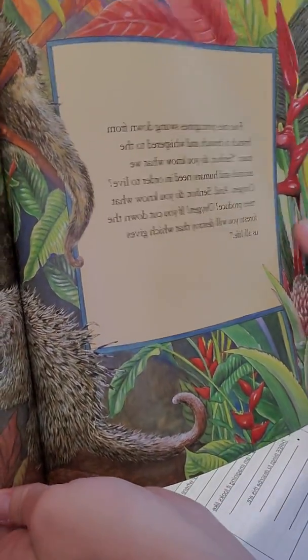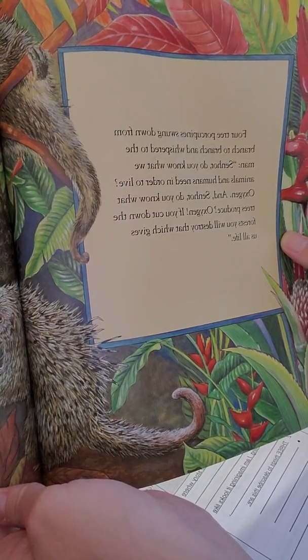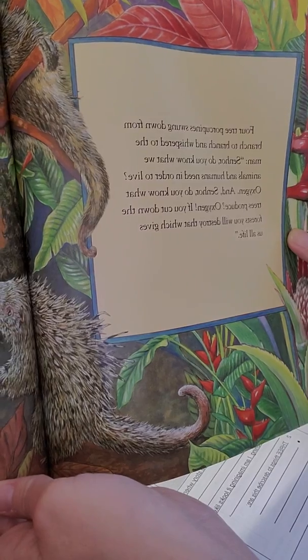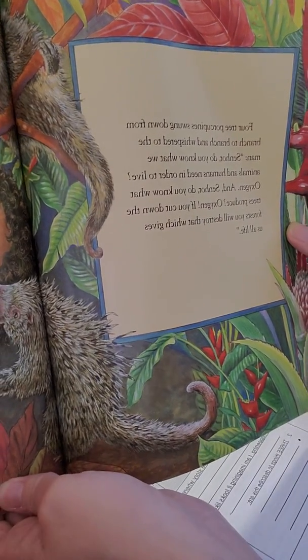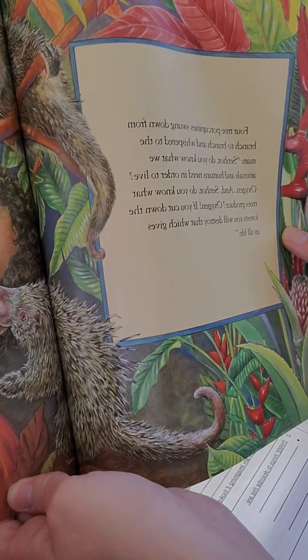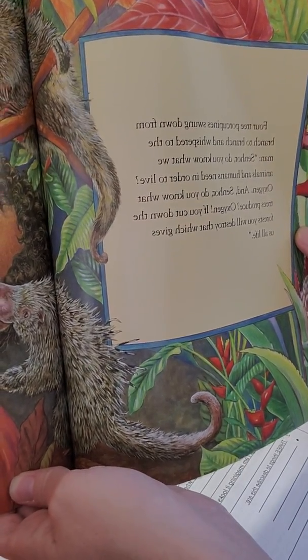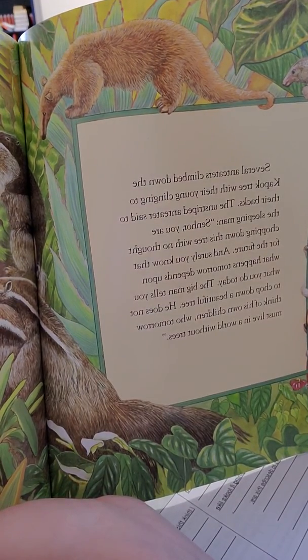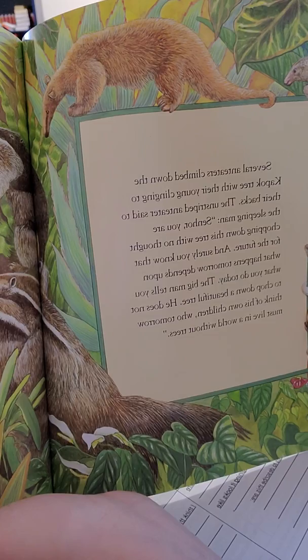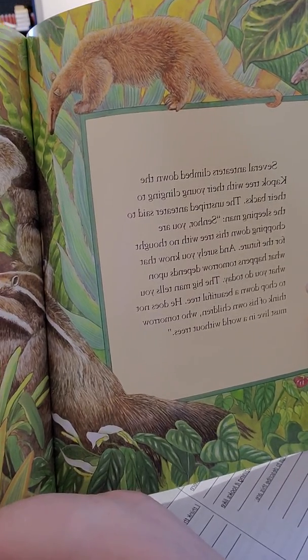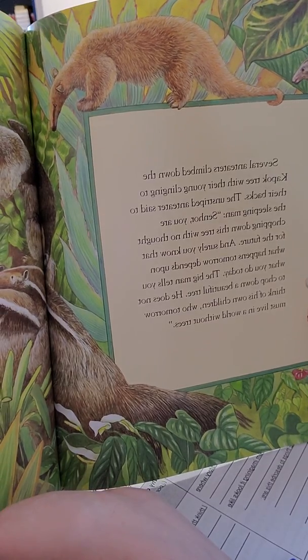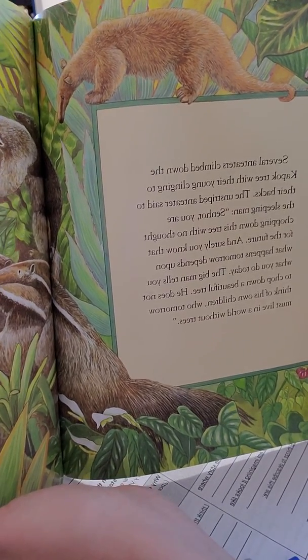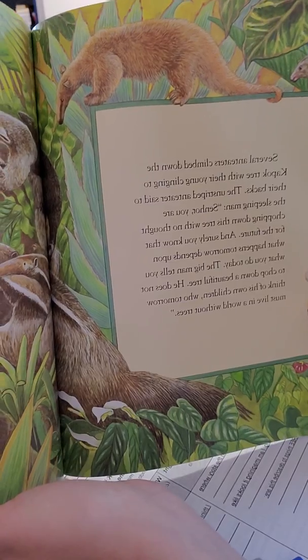Four tree porcupines swung down from branch to branch and whispered to the man, Senor, do you know what we animals and humans need in order to live? Oxygen. And Senor, do you know what trees produce? Oxygen. If you cut down the forest, you will destroy that which gives us all life. Several anteaters climbed down the kapok tree with their young clinging to their backs. The unstriped anteater said to the sleeping man, Senor, you are chopping down this tree with no thought for the future, and surely you know that what happens tomorrow depends on what you do today. The big man tells you to chop down a beautiful tree. He does not think of his own children, who tomorrow must live in a world without trees.